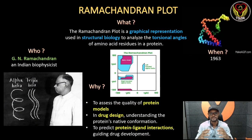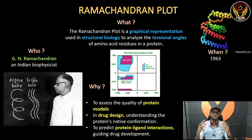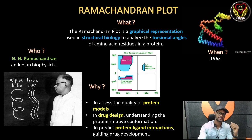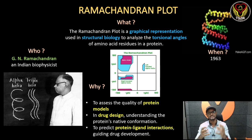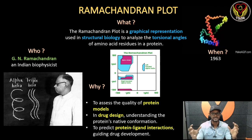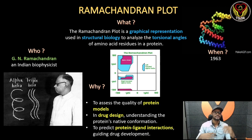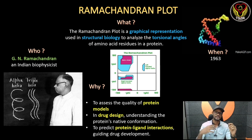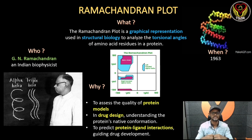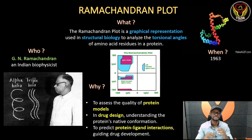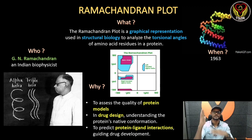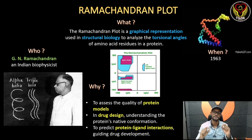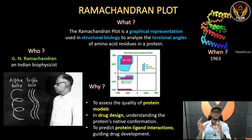Let's talk about the Ramachandran Plot. First, we can talk about the what. The Ramachandran Plot is a graphical representation used in structural biology to analyze the torsional angle of amino acid residues in protein. If you say anything about the Ramachandran Plot, it's a graphical representation — you can talk about the graph, x-axis, y-axis, and mark the graph. That is the Ramachandran Plot.